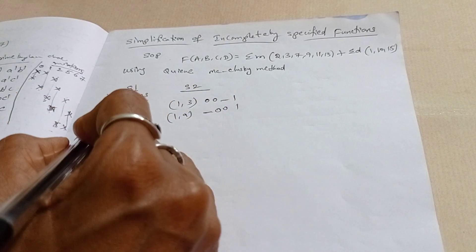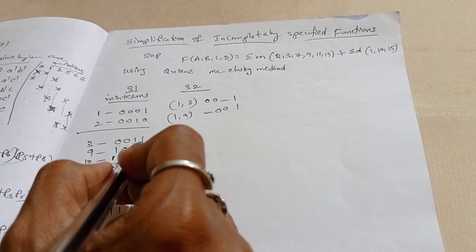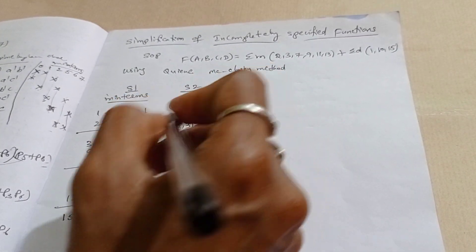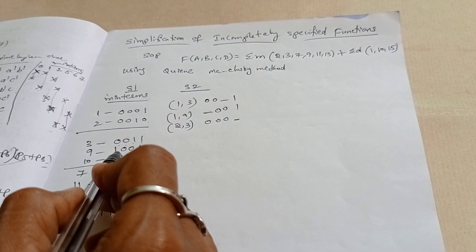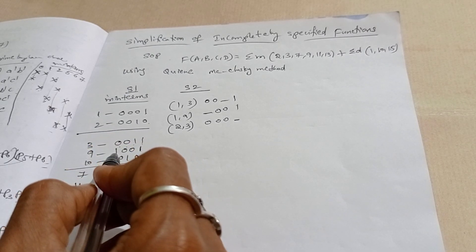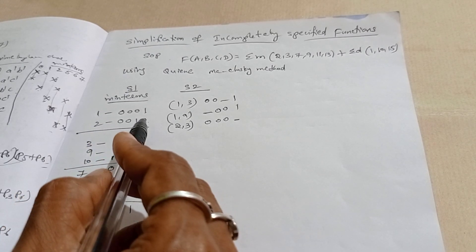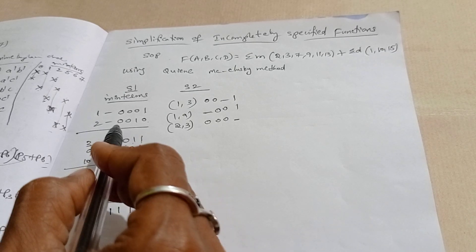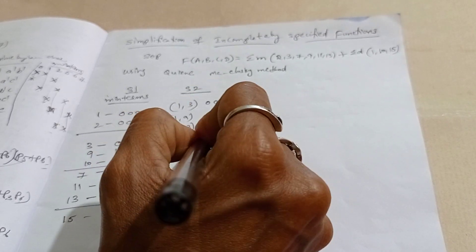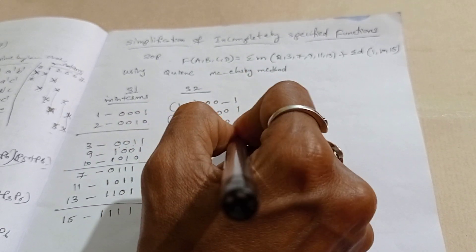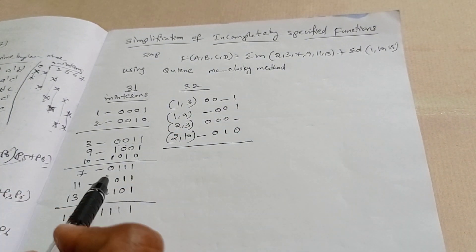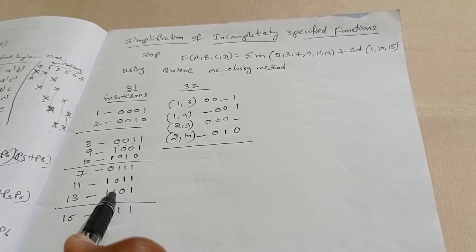Comparing group 0→1: 2 (0010) with 3 (0011) — only one change, so they pair: 0010, 0011 → 00-1-. Next, 2 with 10: that is hyphen-zero-one-zero (−010), so 2 and 10 are paired. This comparison is now completed.